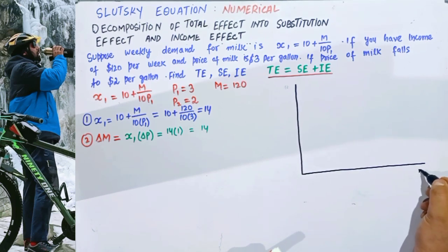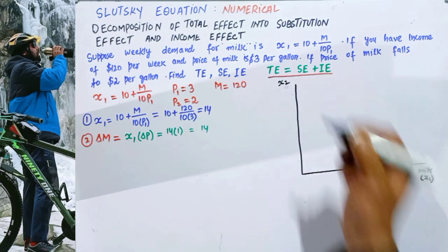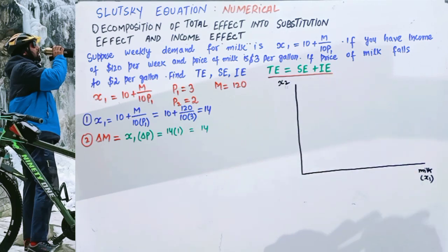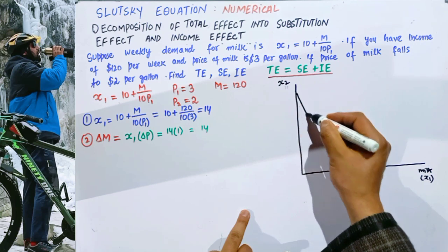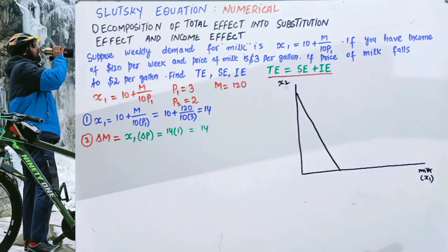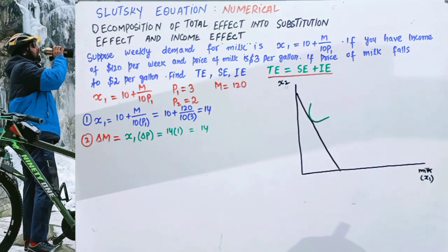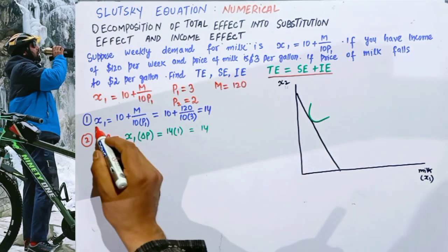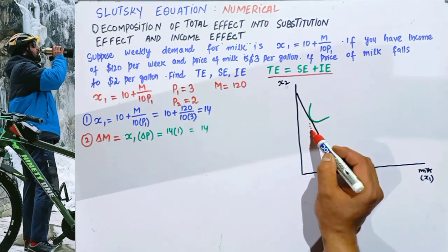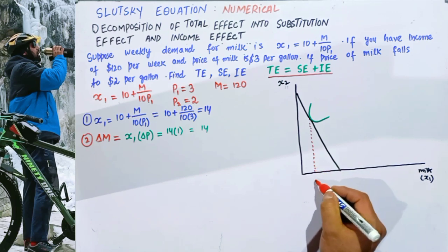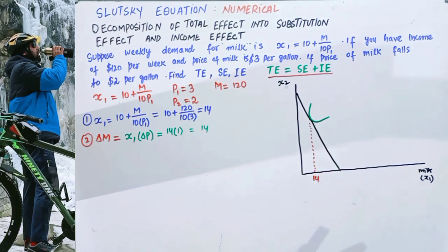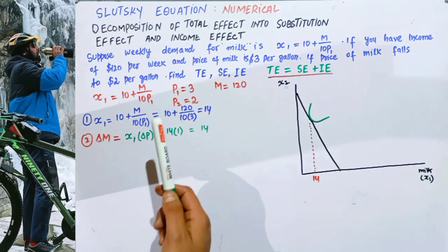On the graph, milk (x1) is on the horizontal axis and some other good (x2) is on the vertical axis. We draw the initial budget line, and optimality requires that the indifference curve is tangent to this budget line. It turns out that initially we are purchasing 14 gallons of milk, shown at point 14 on the graph.